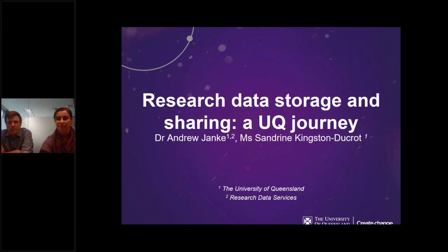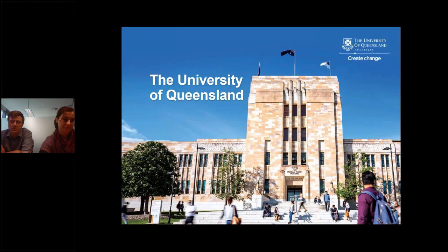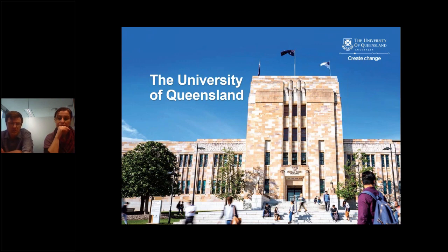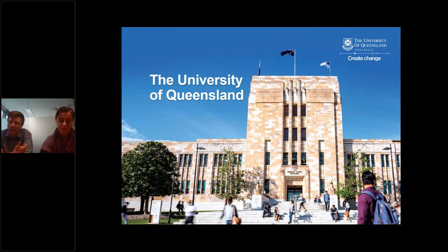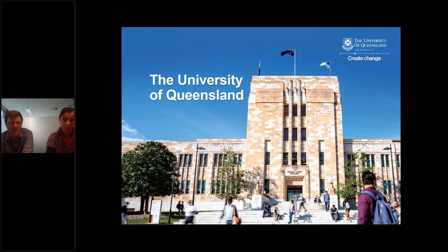So we're going to both do this today. The first thing is to give you an introduction to UQ for those who aren't aware. UQ is a university of about 2,700 academics. We have about 5,000 HDRs typically at any point in time — PhD and master's students. This project was not just about building a new system, but about changing how UQ thinks about research data.